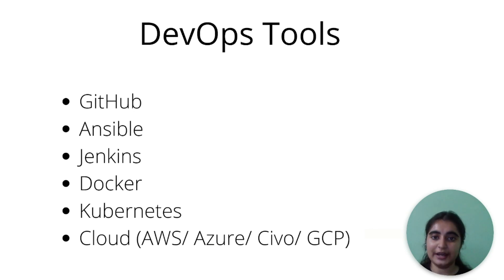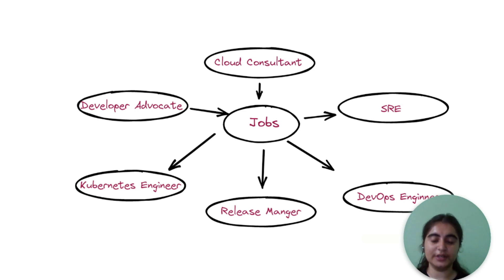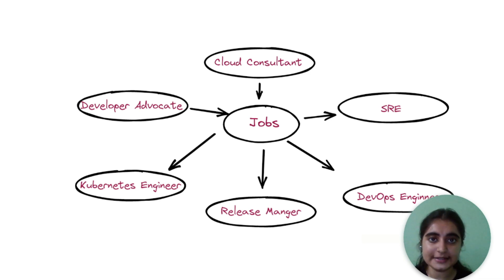Since this is just the introductory series of DevOps, as videos come out one by one, you will get an overview of all these DevOps tools. Now let's look at different job roles in this domain: Site Reliability Engineer (SRE), DevOps Engineer, Release Manager, Developer Advocate (a very trendy role nowadays), and Kubernetes Engineer. Apart from these roles, you can also write technical blogs to enhance your technical writing skills and start a journey as a technical writer.